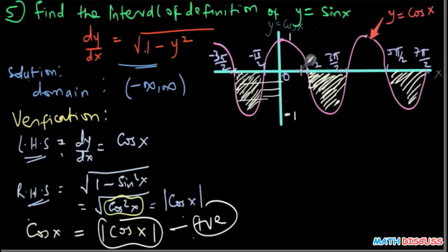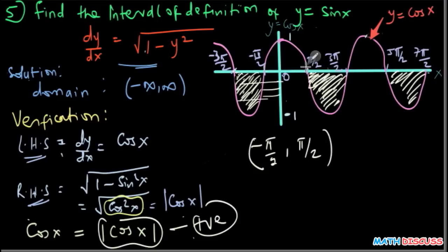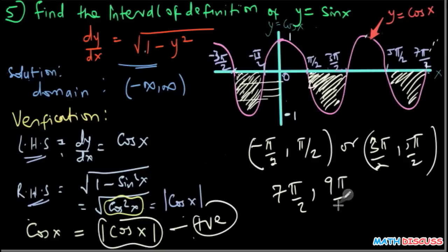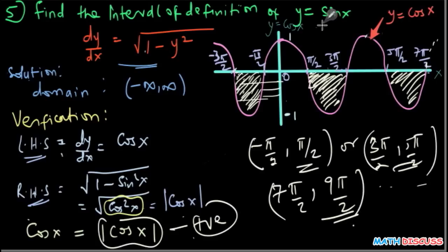From the graph, we see that the valid intervals all have equal lengths. The interval of definition can be any one of them. The first option is negative pi over 2 to pi over 2, where cosine x is all positive. Alternatively, you could choose 3 pi over 2 to 5 pi over 2, or 7 pi over 2 to 9 pi over 2, and so on. Any of these is a valid interval of definition of y equals sine x as a solution of the differential equation.